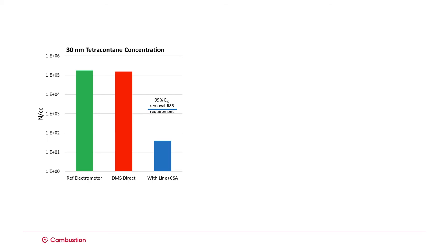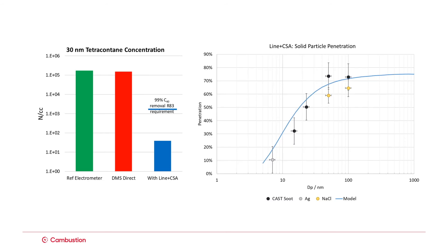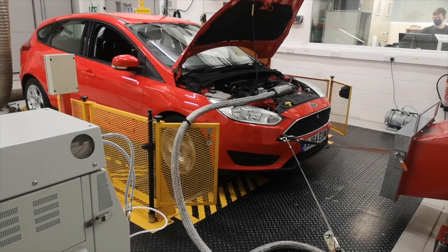The CSA removes over 99% of a tetracontane test aerosol, meeting this requirement of the European legislation. The rapid transit time ensures particle losses are low, while active control of the catalyst and outlet temperatures ensures highly repeatable performance.